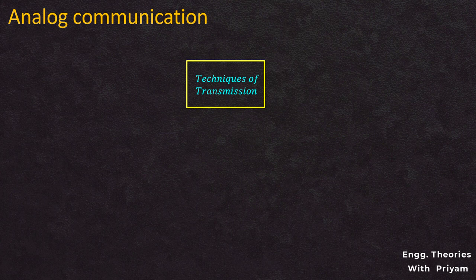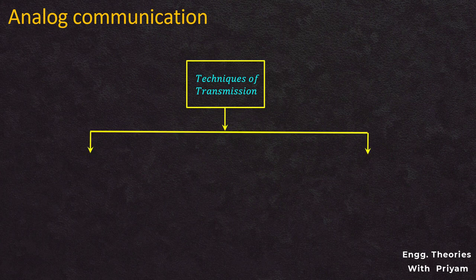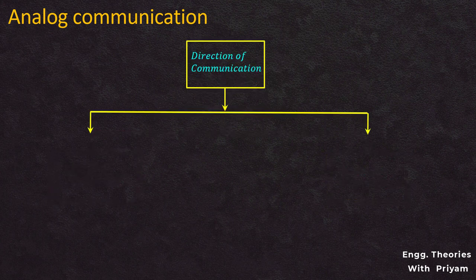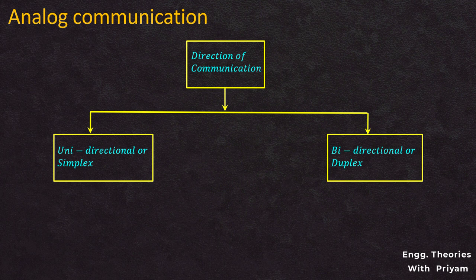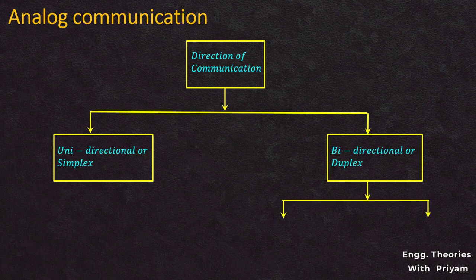Based on the techniques of transmission, it can be divided into baseband transmission and passband transmission. Based on the direction of communication, it can be unidirectional or simplex communication, and bidirectional or duplex communication, which can be further divided into half-duplex and full-duplex communication systems.